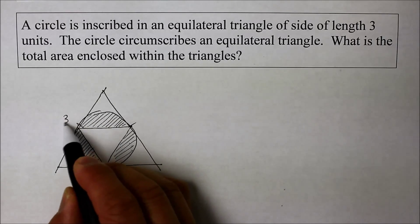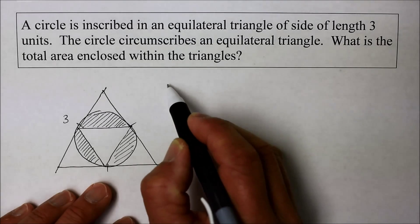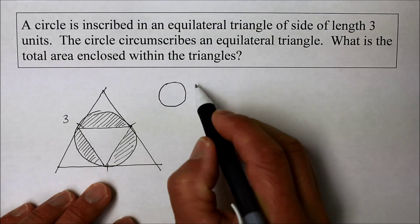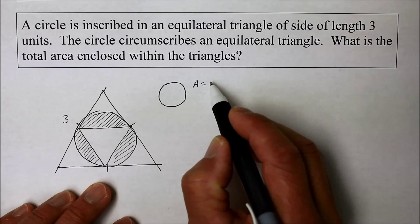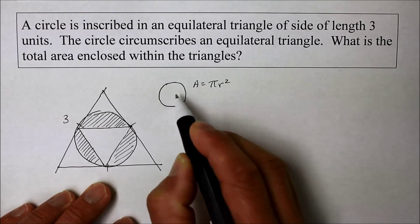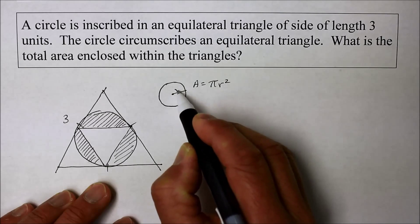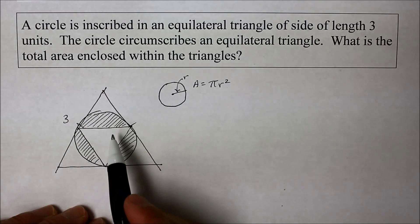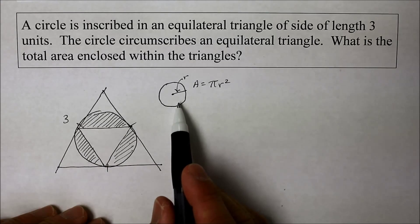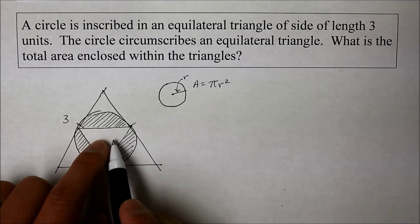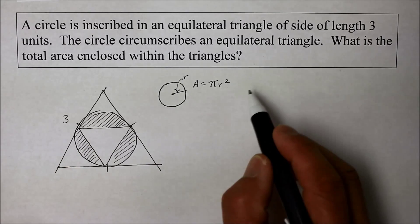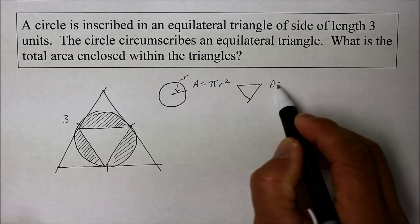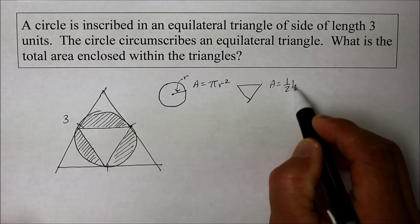So it looks like what we need to find out is first the circle. We need to find the area of a circle. And we know that the area of a circle formula is pi r squared. So we need to find out what the radius r is. We don't know this right now. And from the circle, we're going to subtract the small triangle away from it, that little thing right there. And the area for that, of course, is 1 half base times height.